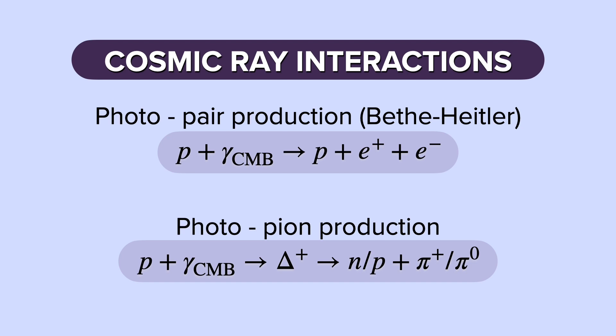Then, we have the photopion production, where our cosmic ray interacts with CMB photons and hadronically produces either a charged or neutral pion.